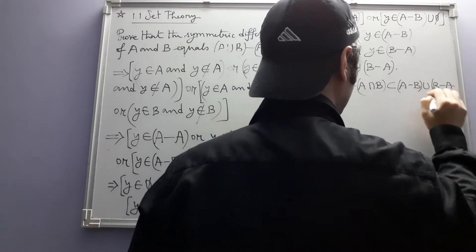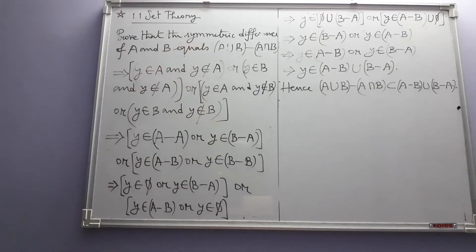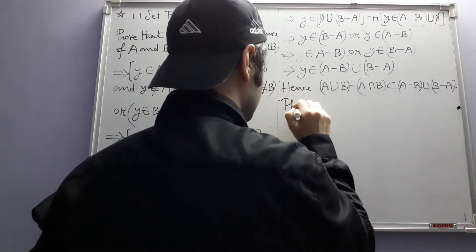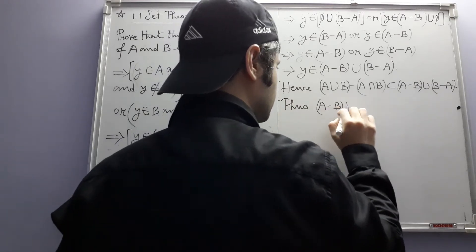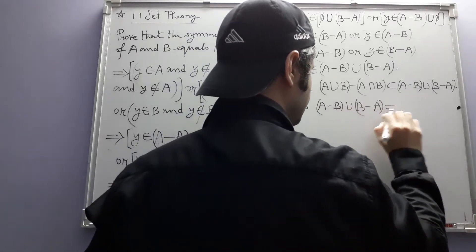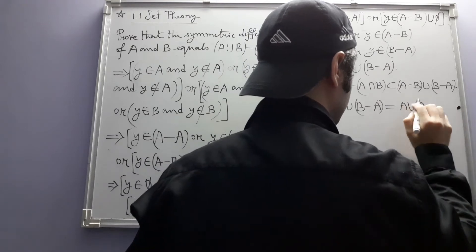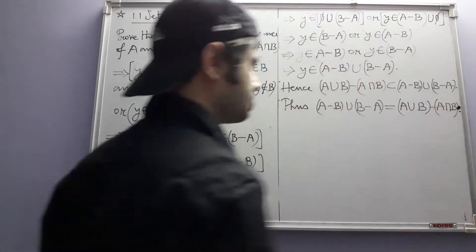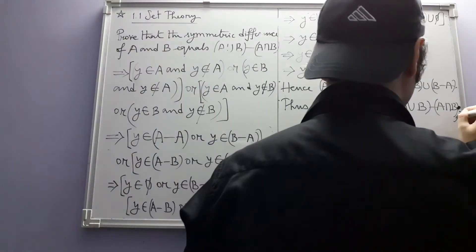Hence this set is also a subset of the symmetric difference. Now you combine this containment relation with the previous one and get equality. Thus the symmetric difference equals this, and this completes the solution.